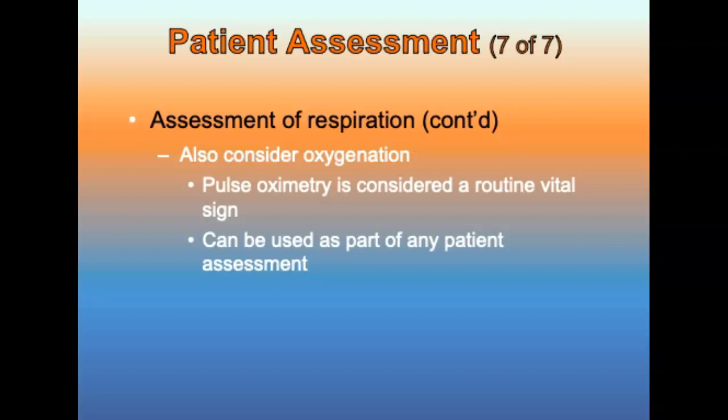Pulse oximeters can take as long as 60 seconds to reflect changes in the patient's oxygenation status. A patient can develop respiratory insufficiency well before pulse ox values begin to decline, so it is critical to monitor the patient and supplement assessment with pulse ox information. Pulse oximetry is considered a routine vital sign. Factors causing inaccurate pulse ox readings include hypovolemia, severe peripheral vasoconstriction, time delay in detecting respiratory insufficiency, nail polish or dirty fingers, and carbon monoxide poisoning. Pulse oximeters do not replace a complete assessment and cannot measure the effectiveness of ventilation or provide information about cellular metabolism.